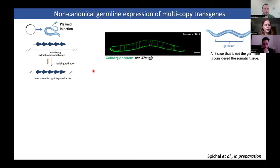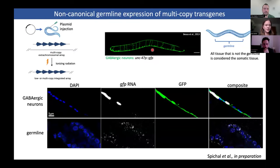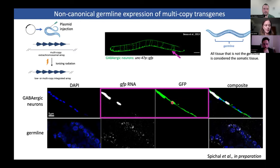One example of that is this ANC47 promoter-driven GFP, that drives GFP expression in the GABAergic neurons. By analyzing RNA expression from these GABAergic neurons, we could see that the RNA expression coming from the GABAergic neurons co-localized with the GFP protein expression, as we expected.